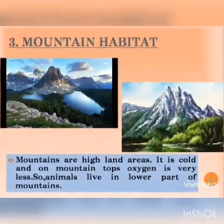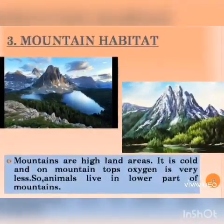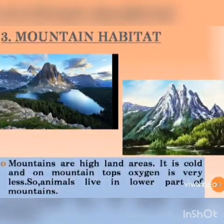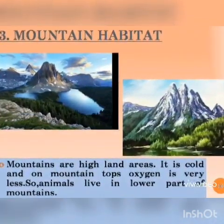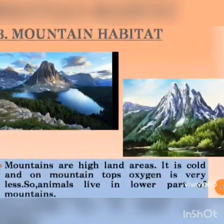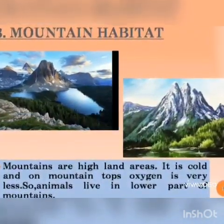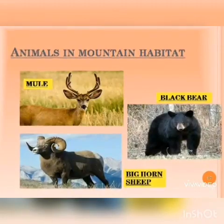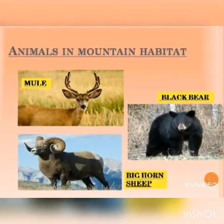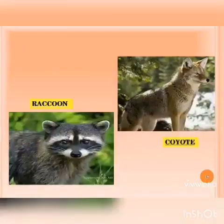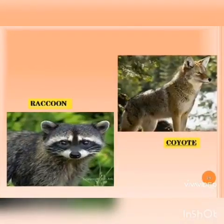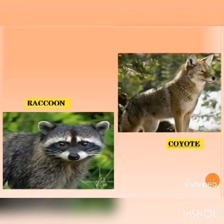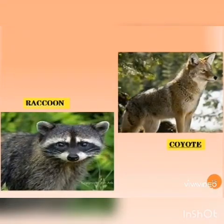Third is mountain habitat. Mountains are highland areas and it is very cold on the mountain tops and oxygen is also very less. So animals live in the lower part of the mountains. For example, mule, black bear, big horn sheep, raccoon etc.